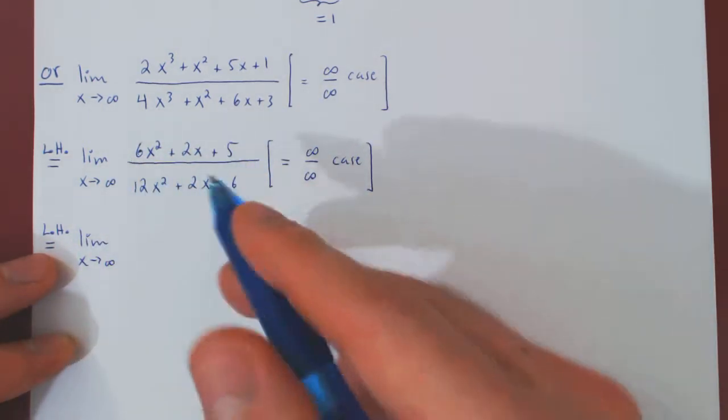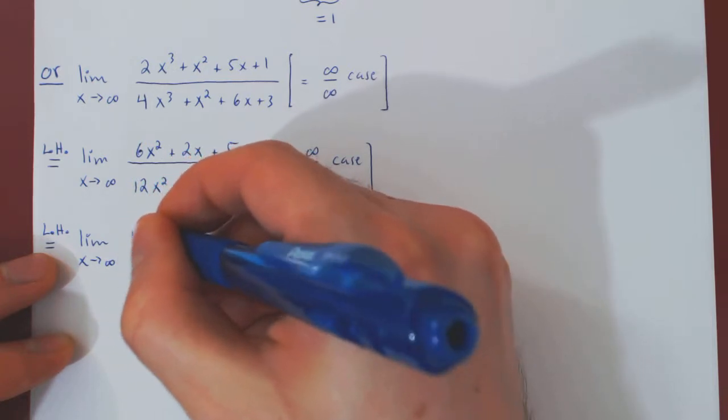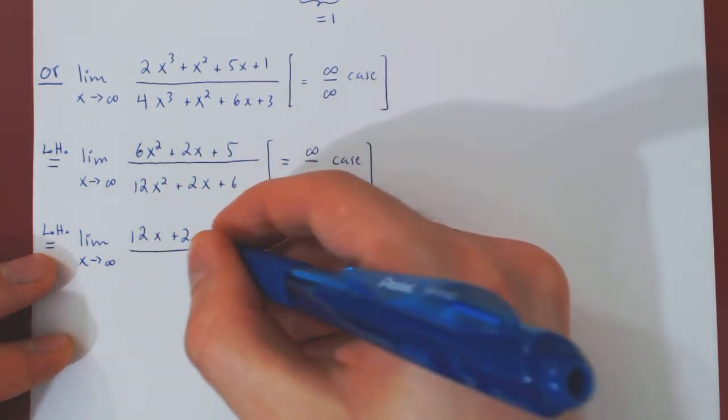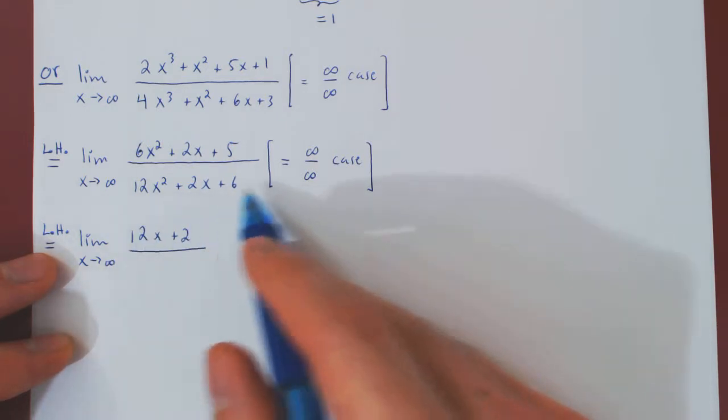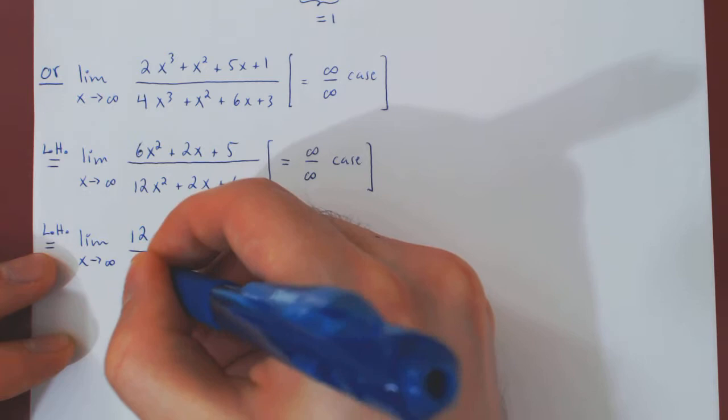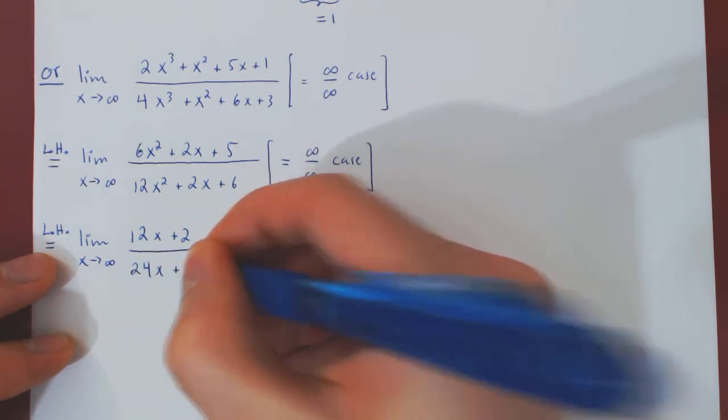So if we differentiate the numerator, we'll get 12x plus 2, over the derivative of the denominator, 24x plus 2.